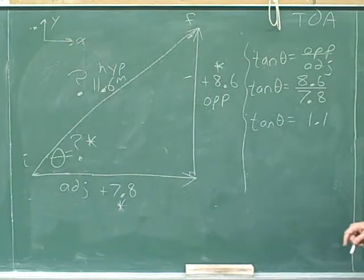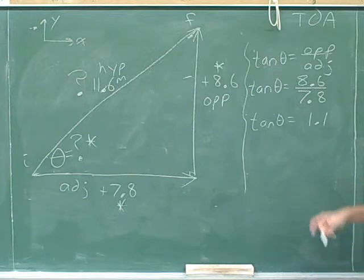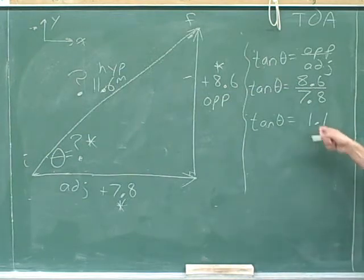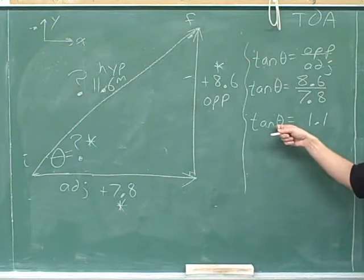If your math skills are weak, it's usually better to do calculations as soon as possible to simplify the equation. If your math skills are stronger, it can be better to postpone the calculations. But let's just do the calculation right now. So 8.6 divided by 7.8 is about 1.1. Now we still have to get the theta by itself.